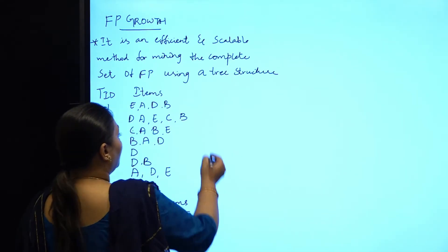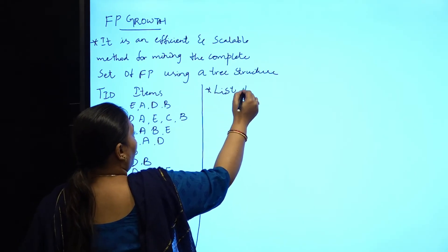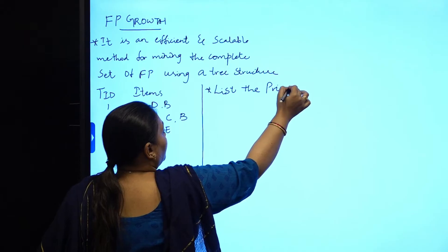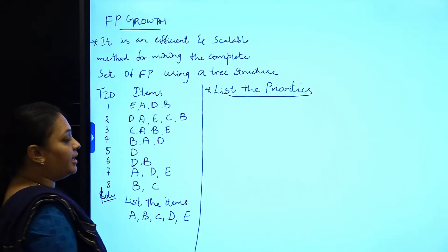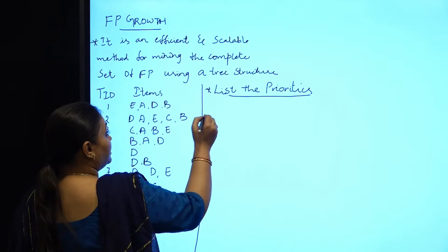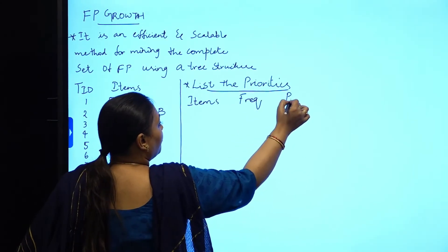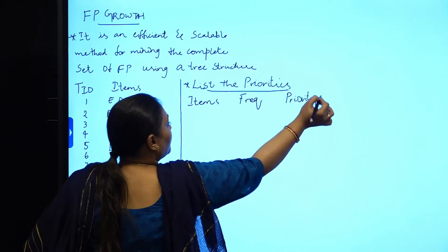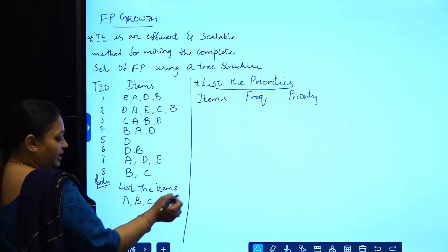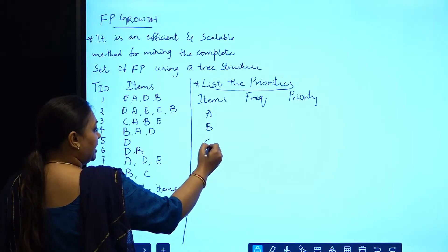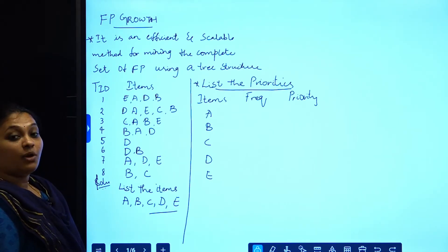The first thing we need to do is list the priorities. To do that, I will set up a second table with three columns: items, frequency, and priority. The items are A, B, C, D, and E.